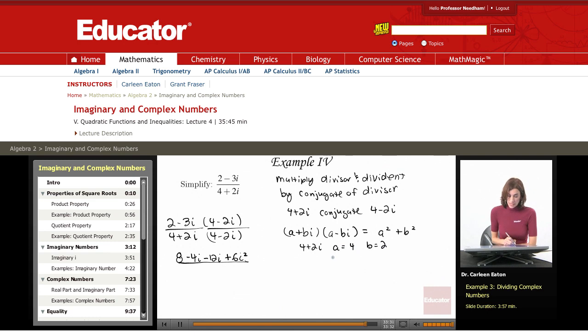So let me just take that shortcut and say that I then have a squared, which is 4. So 4 squared plus b squared, which is 2 squared.